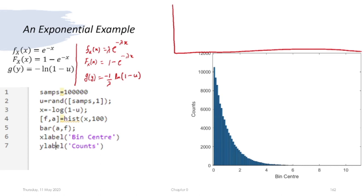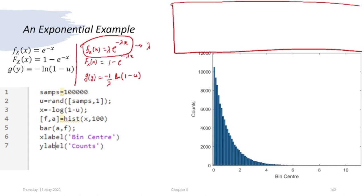We will first look at the exponential random variable. The details are already written on this slide, but I will recapitulate. In general, the probability density function of an exponential random variable is f_X(x) = λe^(−λx), and the mean turns out to be 1/λ. The cumulative distribution function takes a corresponding form, and consequently we can write g(y) in general.